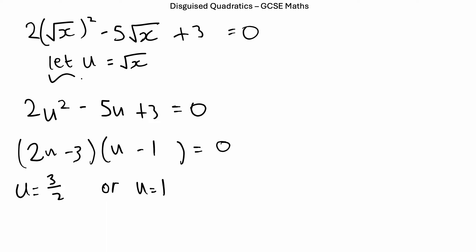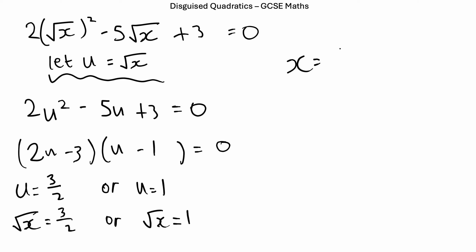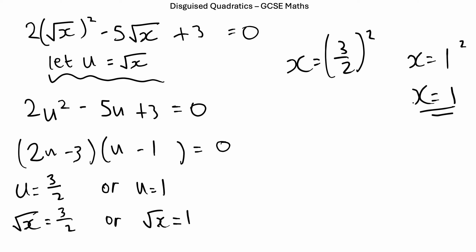But we're not quite done yet, because we let u equal root x. So we rewrite this as root x equals 3 over 2, or root x equals 1. We're still not done — we want our answer in x equals something form. So we square both sides: x equals (3 over 2) squared, or x equals 1 squared. Well, 1 squared is just 1, so x equals 1. And (3 over 2) squared is 3/2 times 3/2, which is 9 over 4. So x equals 9 over 4. We have two answers: x is 9 over 4 and x is 1.